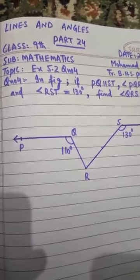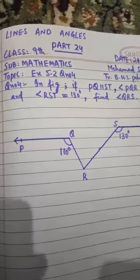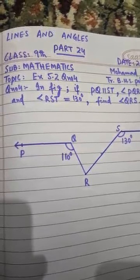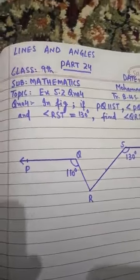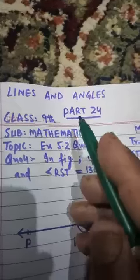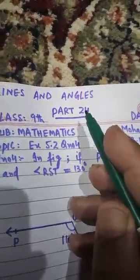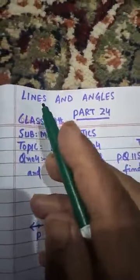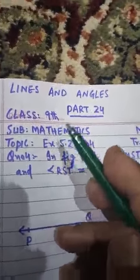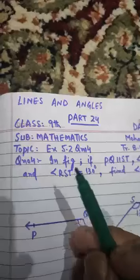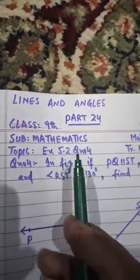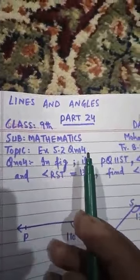Dear students, Assalamu alaikum warahmatullahi wabarakatuhu. Today is our lecture number 24 from the chapter Lines and Angles in 9th class Mathematics. Our today's topic is exercise 5.2 question number 4.